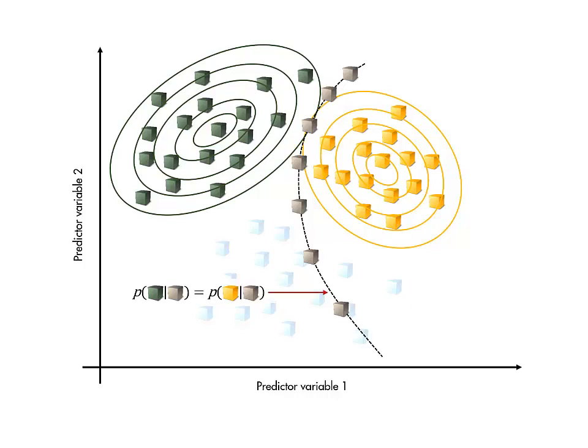We can do all this theoretically, resulting in an equation for the boundary that depends on the parameters of the fitted distributions. This means that we don't actually need to go through the whole process to perform discriminant analysis. We just need to calculate the means and covariances and apply the formula for the boundary.